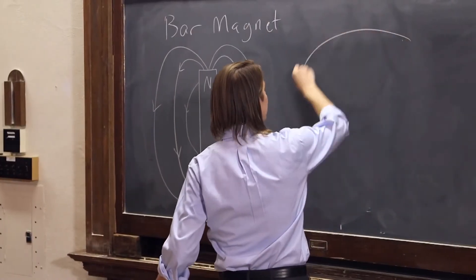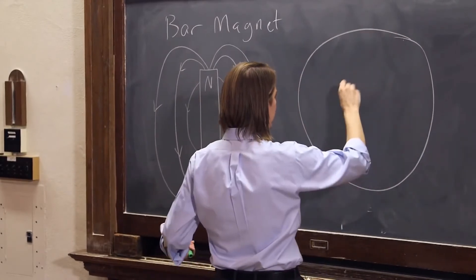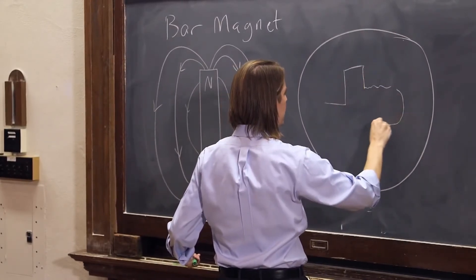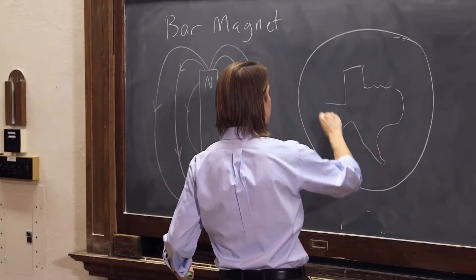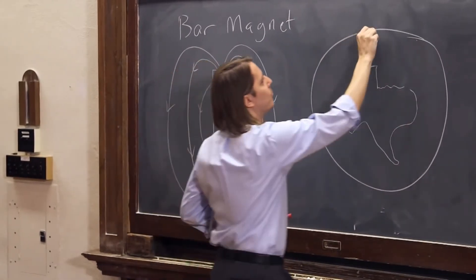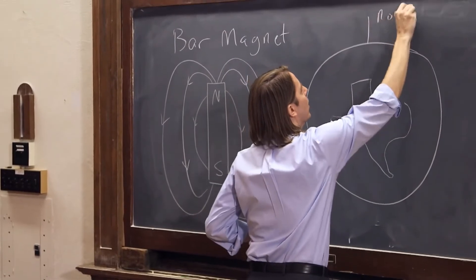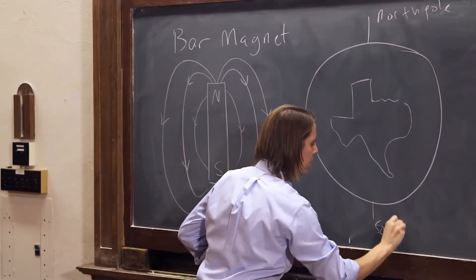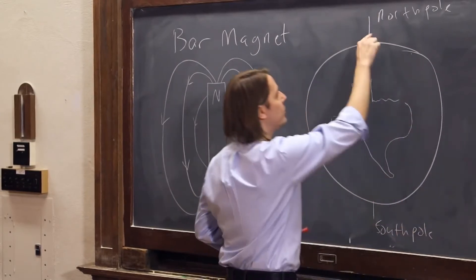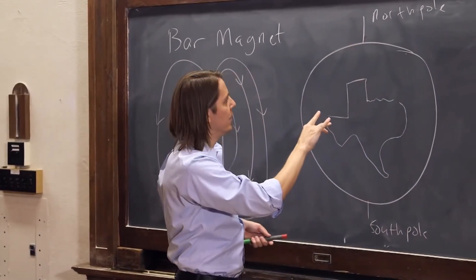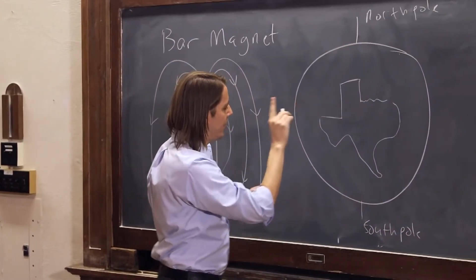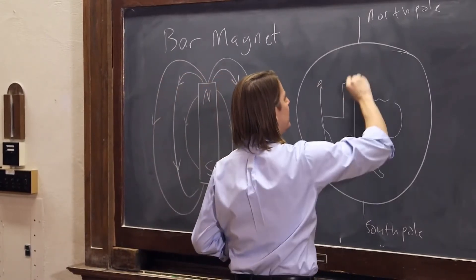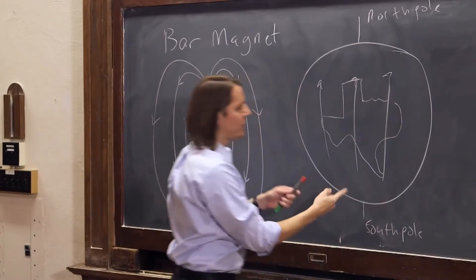So if I draw the Earth here, and if I draw some of the important structures of the Earth, that's the Earth. This is the North Pole and this is the South Pole. So Santa Claus lives here and the penguins live down here. Now we know then that the Earth has its own magnetic field where the field points basically this way. It points from south to north.